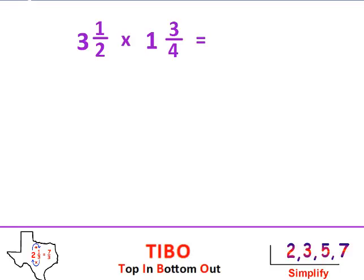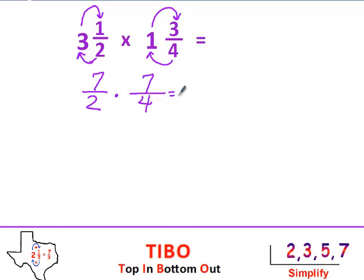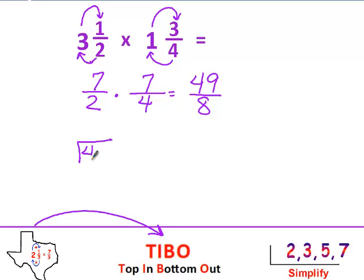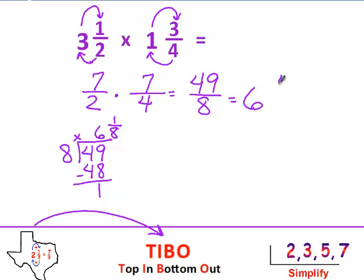The first thing I need to do is get everything into fraction form. I'm going to leave the denominator the same. 2 times 3 is 6, plus 1 is 7. Same thing for this — I leave the denominator 4. 4 times 1 is 4, plus 3 is 7. They're in fraction form, and now I just multiply across. 7 times 7 is 49. 2 times 4 is 8. I see that this answer is improper, so I'm going to T-bow it to change it back to a mixed number. Top in, bottom out. I can get 6 groups of 8 out of 49. 6 times 8 is 48. I have 1 left over — that's my numerator, and this is my denominator. The answer is 6 and 1 eighth. I know it doesn't simplify because 1 is smaller than all the magic numbers.